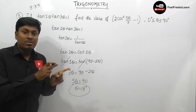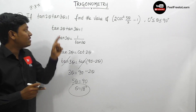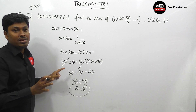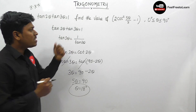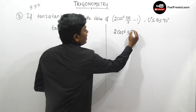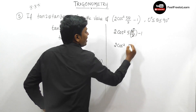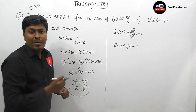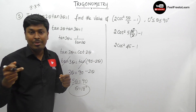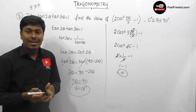Substituting θ equals 18° into 2·cos²(5θ/2) minus 1: 5 times 18 divided by 2 equals 45, so this becomes 2·cos²45° minus 1. Since cos 45° equals 1/√2, cos²45° equals 1/2. Therefore 2·(1/2) minus 1 equals 1 minus 1 equals 0. The answer for question number 5 is 0.